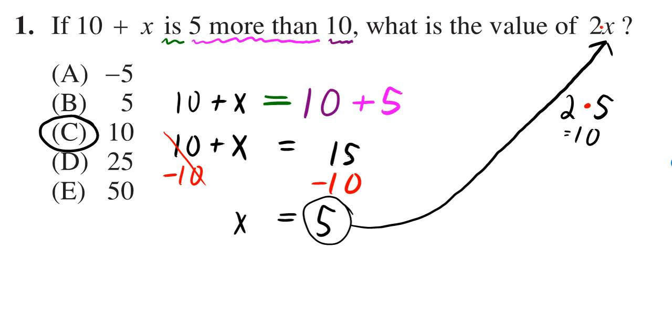So x is equal to 15 minus 10, which is 5. But don't put 5 as your answer because they're asking for the value of 2x, which means 2 times x. So our answer is 2 times 5, which is 10.